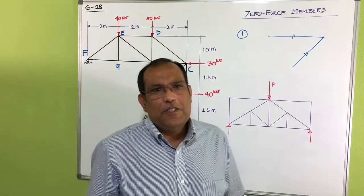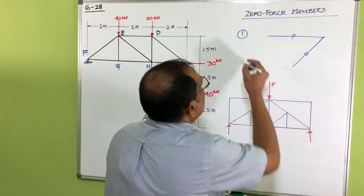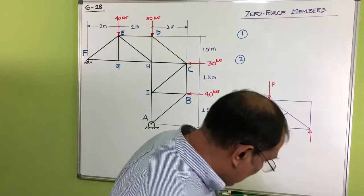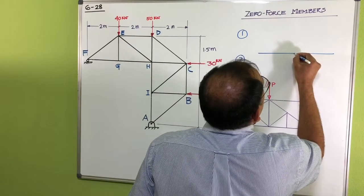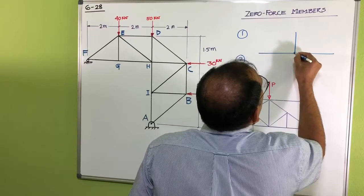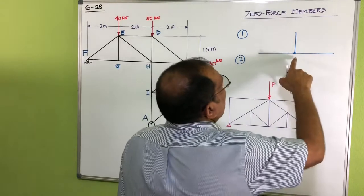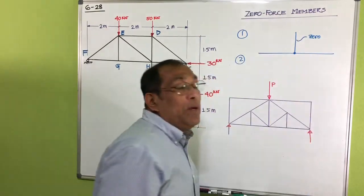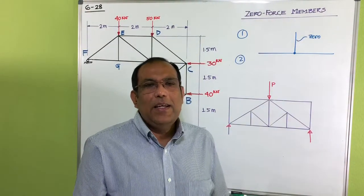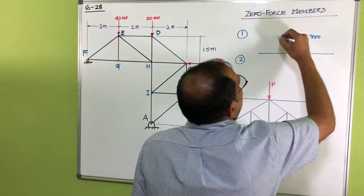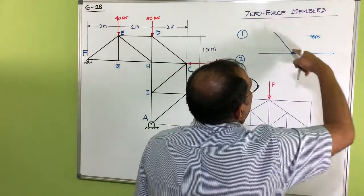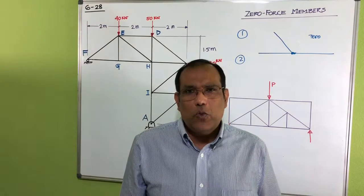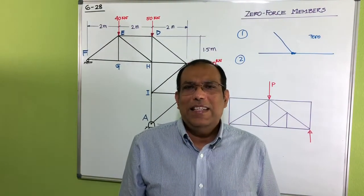The second rule: if you have two collinear members at a joint and one additional member going in a different direction, with no external force at that joint, then that third member must be a zero force member, because there's no other member to carry force in that perpendicular direction. Remember: if there is any external force at the joint, the member will not be a zero force member.